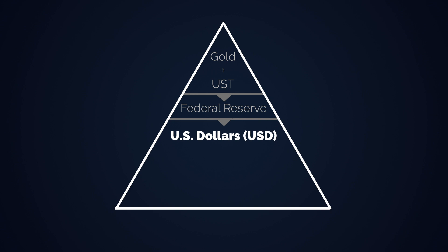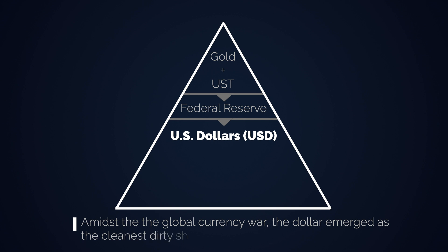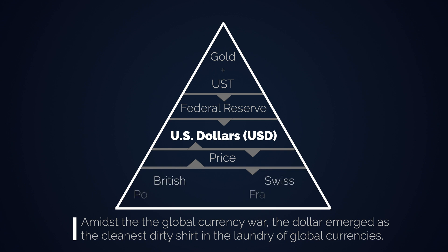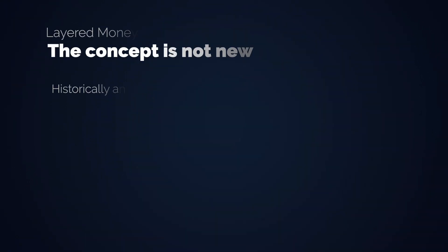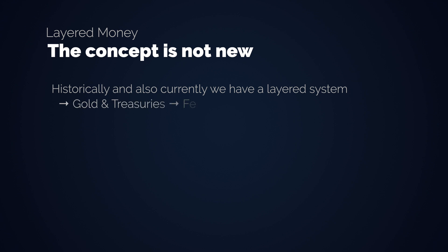But what about other currencies? Amidst the global currency war, the dollar emerged as the cleanest dirty shirt in the laundry of global currencies. The US Dollar became the World Reserve currency, and through the Bretton Woods Agreement in 1944, every other currency was now third layer money. However, the Bretton Woods system failed because nations depleted the gold reserves of the Fed and the Fed kept printing dollars without any established reserve ratio. Nick and I just wanted to run you through a little bit of history to show that layered money is not a new concept — it's something we historically always had. Historically and currently, we have a layered system with US and other Treasuries and gold held by central banks at the top, followed by payment rails like Fedwire and ACH, and then on the fourth layer or so we have the transactional layers that we all use, like credit cards and PayPal.